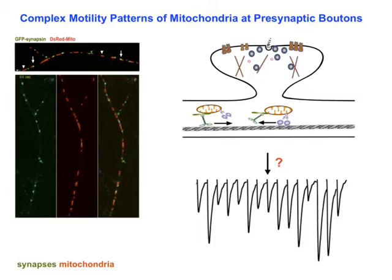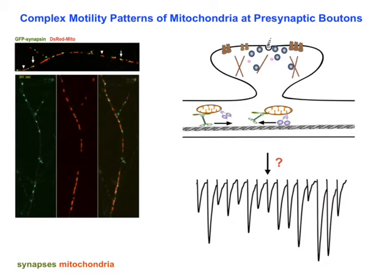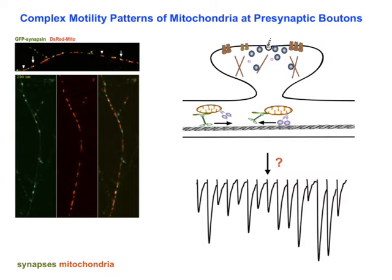However, it is not known which dynamic process in axons is the primary source for pulse-to-pulse variability. Mitochondria maintain synaptic transmission by producing ATP and buffering calcium. One third of axon mitochondria undergo dynamic and bidirectional transport, some of which passing through synaptic terminals.